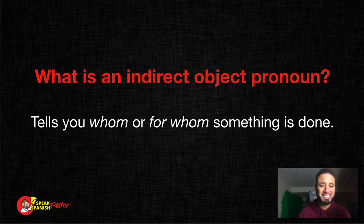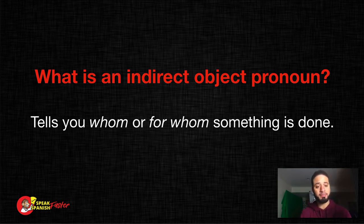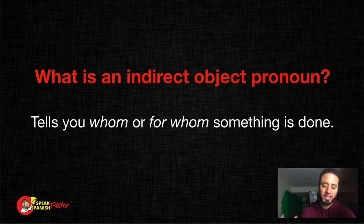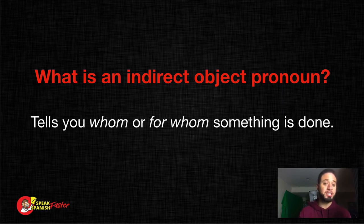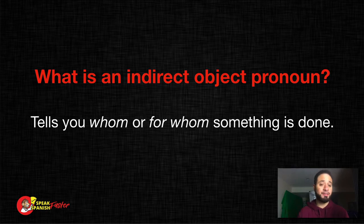Okay, vamos a empezar. What is an indirect object pronoun? An indirect object pronoun tells you to whom or for whom something is done. I'm going to go back and forth recapping a little of what I covered with direct objects so you can easily understand the difference between an indirect object and a direct object, and then that will help you understand the difference between an indirect object pronoun and a direct object pronoun.